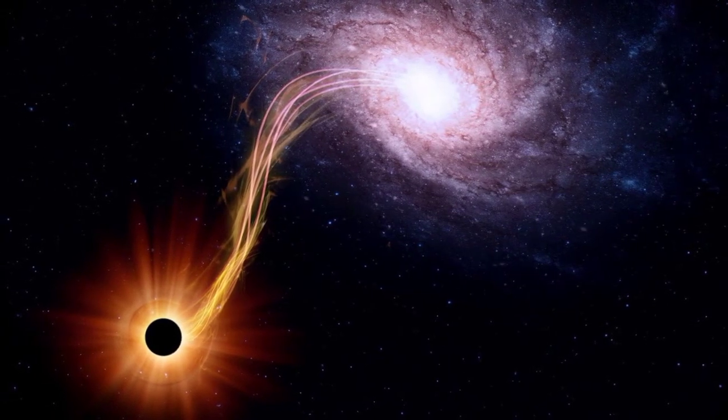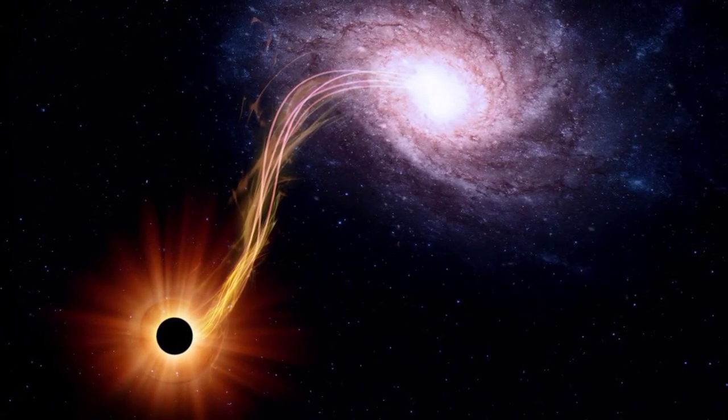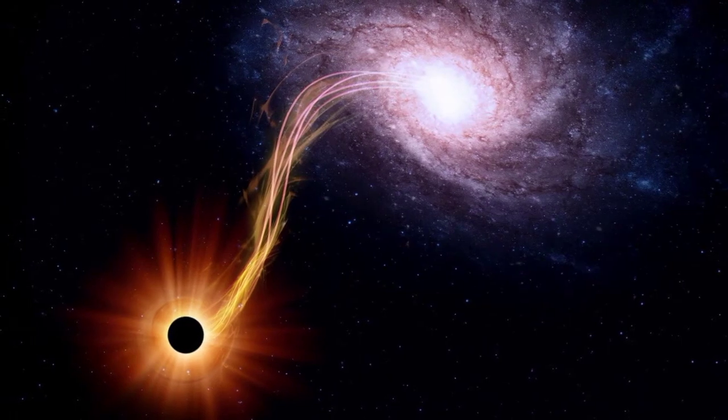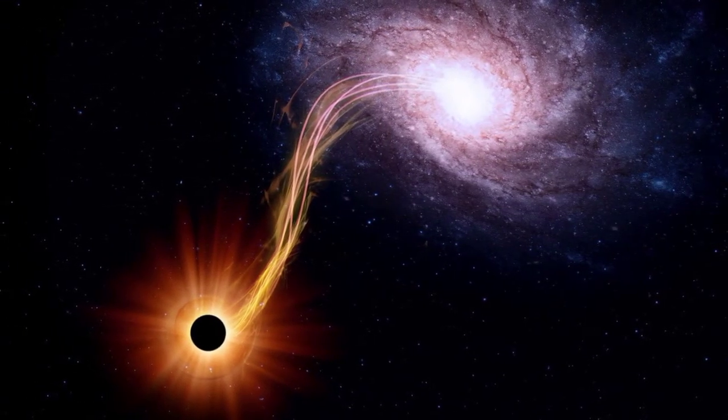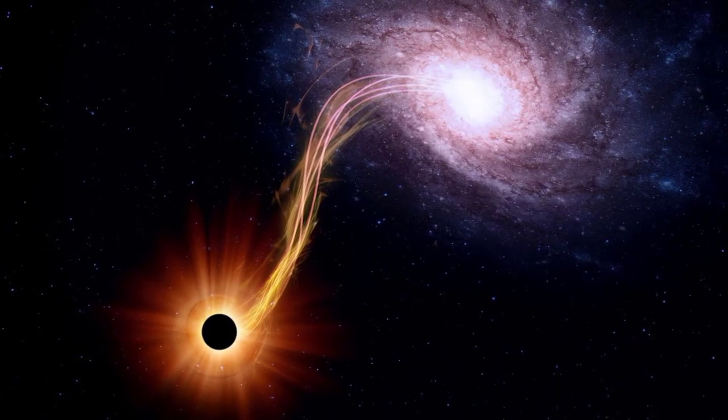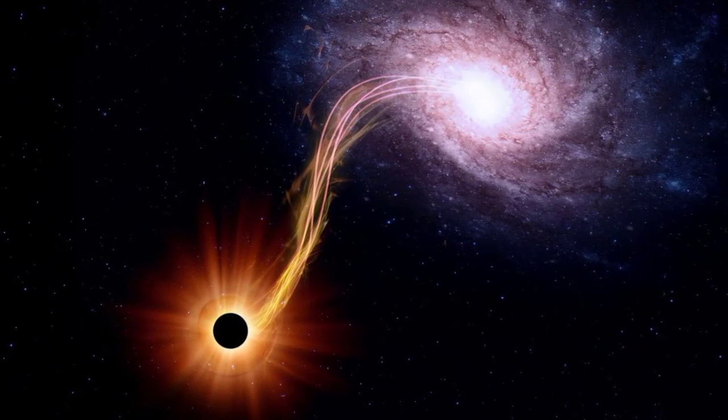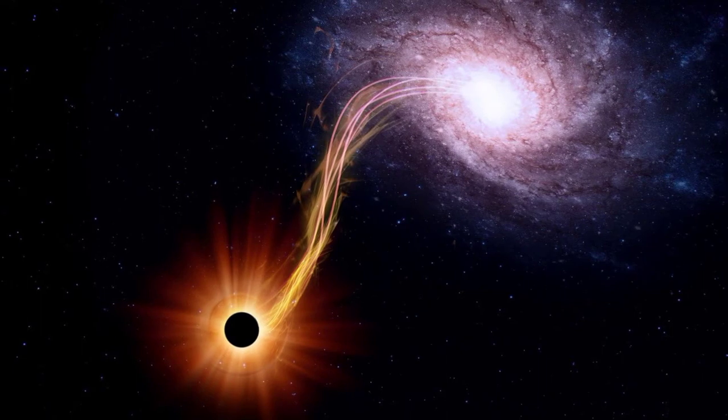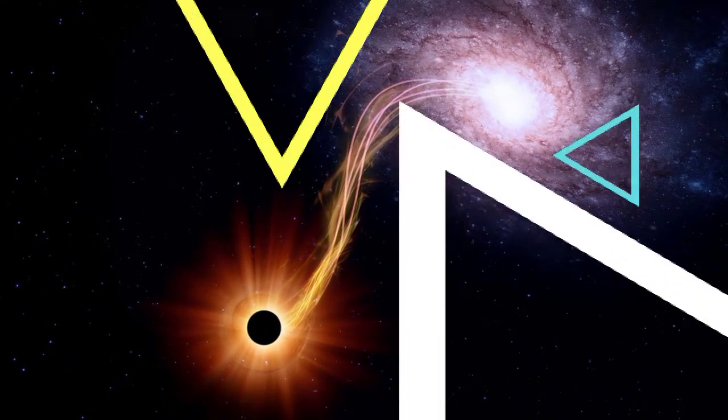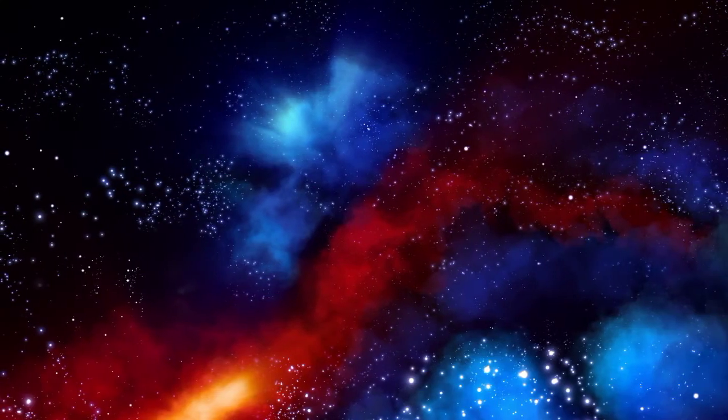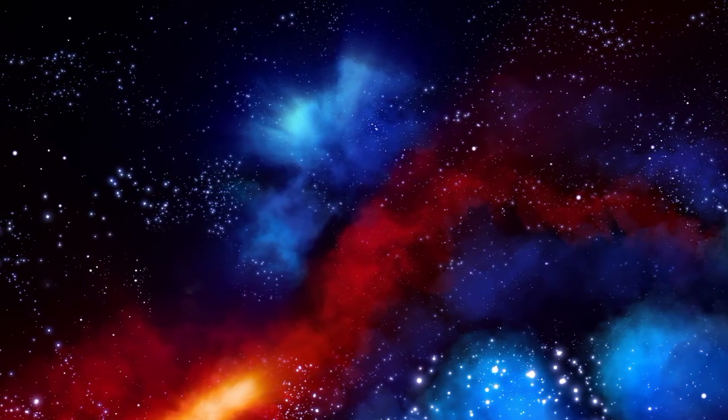The fastest spinning neutron star known is PSR J1748-2446ad, rotating at the rate of 716 times a second, or 43,000 revolutions per minute.